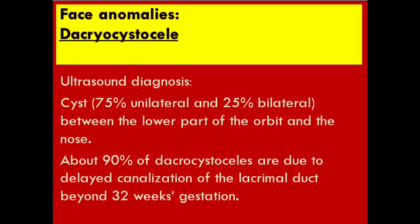The next is dacryocystocele. Ultrasound diagnosis: 75% unilateral and 25% bilateral, located between the lower part of the orbit and the nose. About 90% of dacryocystoceles are due to delayed canalization of the lacrimal duct beyond 32 weeks gestation.